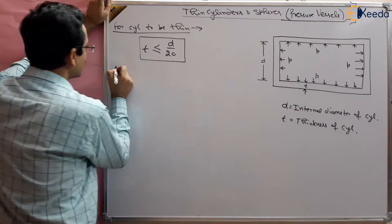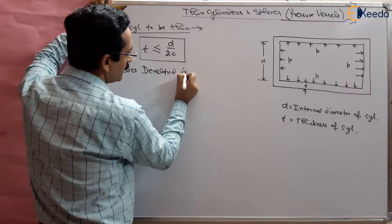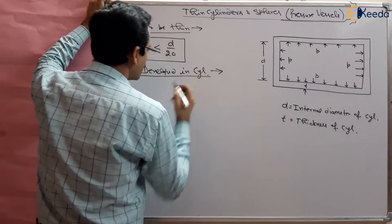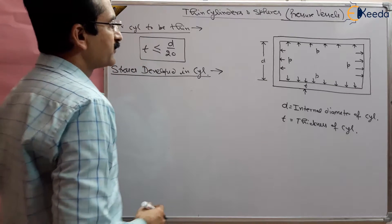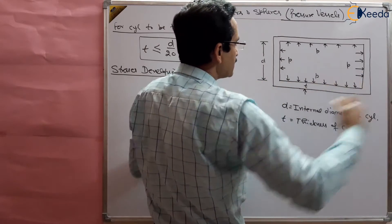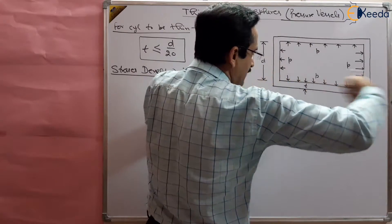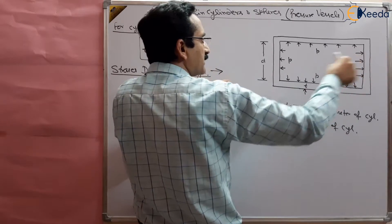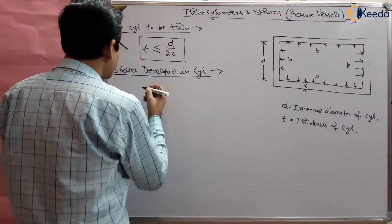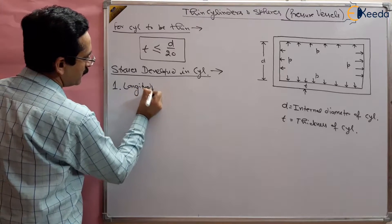What are the stresses developed in this cylinder? We are talking about a cylinder — the same case applies to spheres also. One of the stresses is longitudinal stress. The pressure is trying to burst in the length direction, so there will be some extension — an increase in length of this material — because both sides the pressure is causing the cylinder to extend in length. So there will be tensile stress developed. The first type of stress is the longitudinal stress, sigma L.